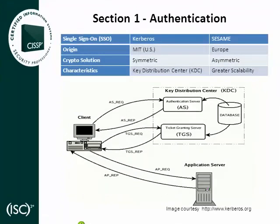The CBK also requires that candidates be familiar with single sign-on technologies used for authentication. Two SSO technologies are Kerberos and Sesame. Kerberos is a ticket-based authentication protocol created in the mid-1980s at MIT. It was not created by Microsoft, contrary to popular belief, but it is used for authentication on Microsoft-based networks running Active Directory directory services. The Kerberos architecture requires a central repository of user accounts and provides single sign-on functionality through a server known as the Key Distribution Center, or KDC. The KDC provides authentication traffic protection through the use of symmetric cryptography. Kerberos allows the user to authenticate once to gain access to various network resources.